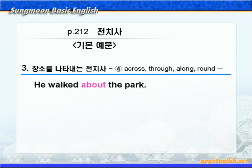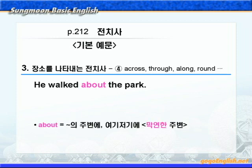계속해서 다른 전치사들을 살펴보죠. about이 나옵니다. 여기 about은 '뭐뭐의 주변에' 혹은 '여기저기에'라는 뜻으로 막연한 주변을 나타내는 전치사니까, '그는 공원 주변을 산책했다'가 됩니다. about이 '뭐뭐에 대하여'라는 뜻 말고, '뭐뭐의 주변에' 즉 around의 뜻이 있다는 거 꼭 기억해 두시기 바랍니다.